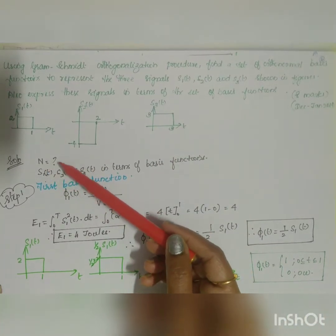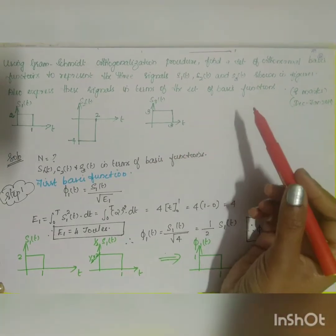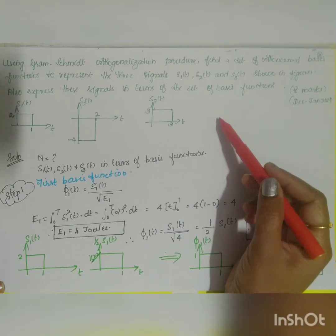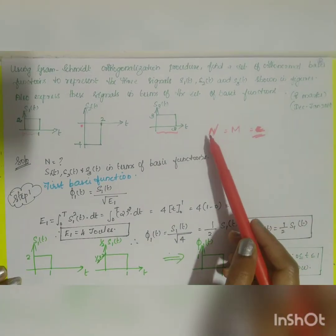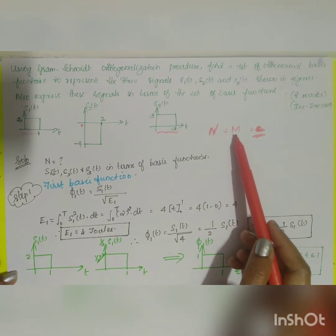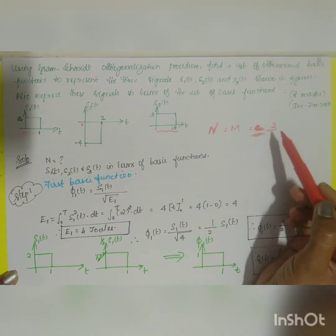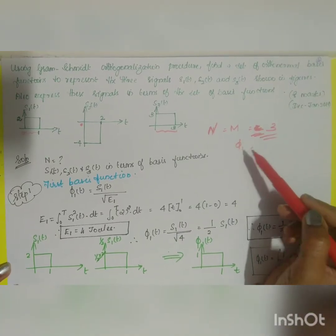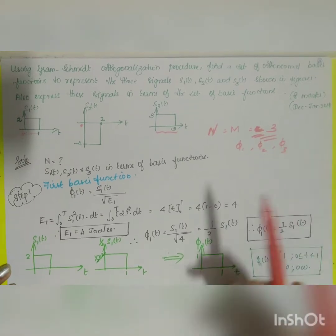There are two tasks. First, find the number of orthonormal basis functions. As mentioned in the previous problem, the number of orthonormal basis functions equals the number of linearly independent message signals. Here we have 3 linearly independent message signals, so the orthonormal basis functions will be φ1, φ2, and φ3.